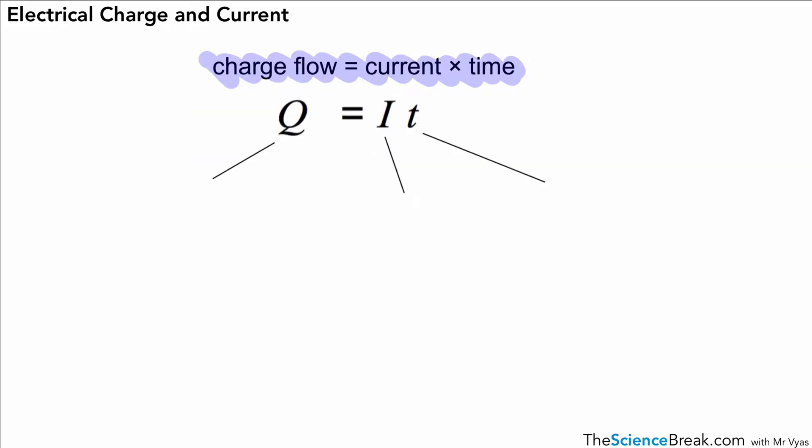And you should know the symbols for that as well. So for charge flow, we have the letter Q, as we just said. For current, again, not logical, but it's the letter I. We do have to remember that. And T, a bit better, is time.